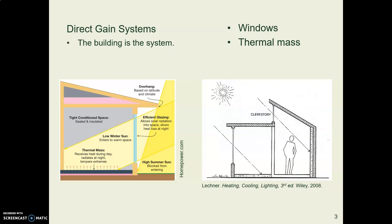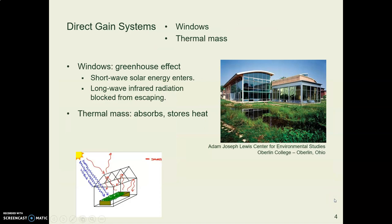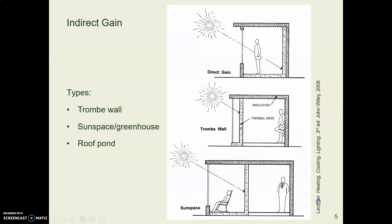In a direct gain system, the building is the system, and it's all about south-facing windows and thermal mass. The south-facing windows act like a greenhouse — they trap the infrared radiation inside the room and keep it from escaping. The thermal mass absorbs the heat and stores it.